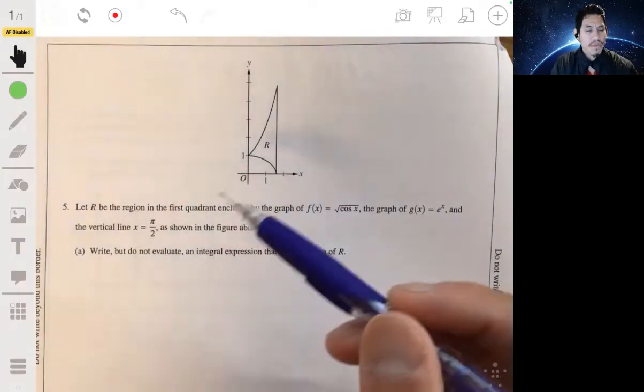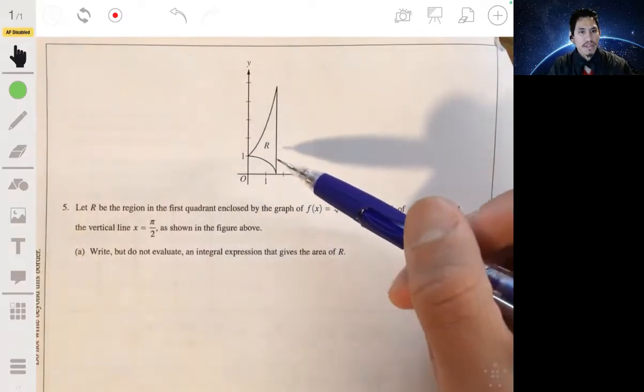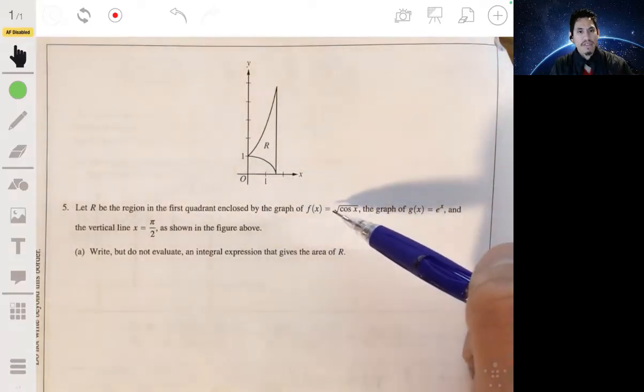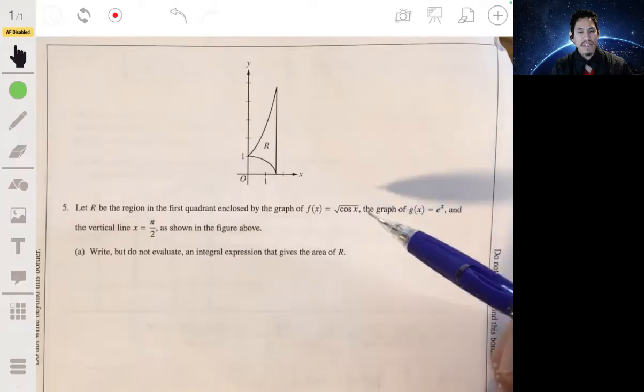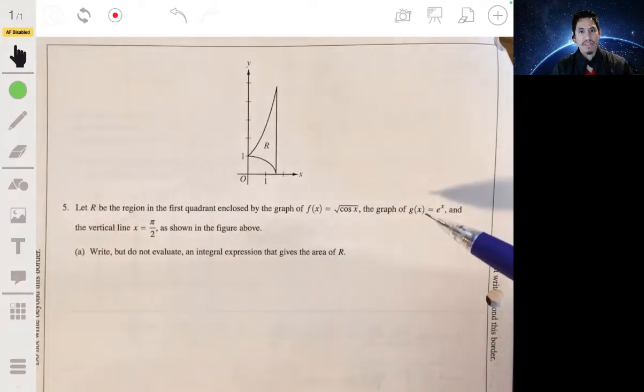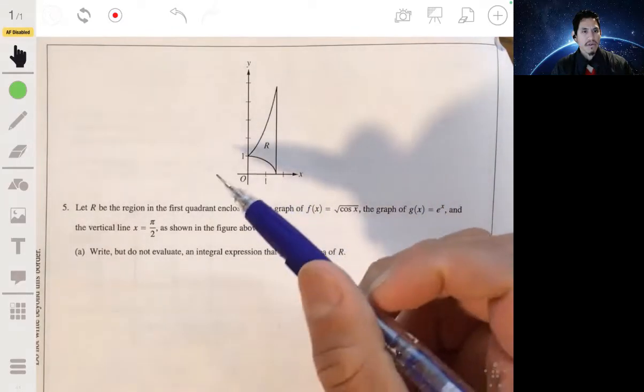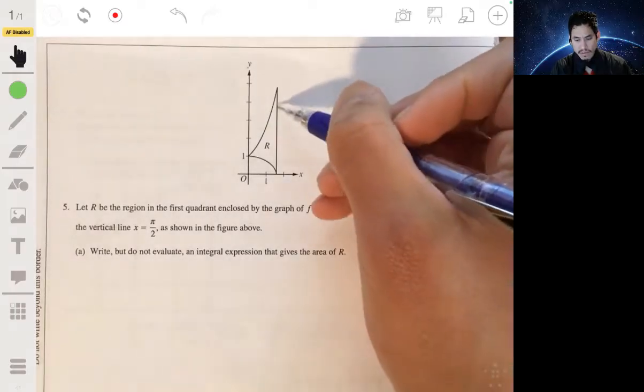Alright, problem five. We have R is the region in the first quadrant enclosed by the graphs of f(x) equals the square root of cosine x, and the graph of g(x) which equals e^x, and the vertical line x equals π/2.